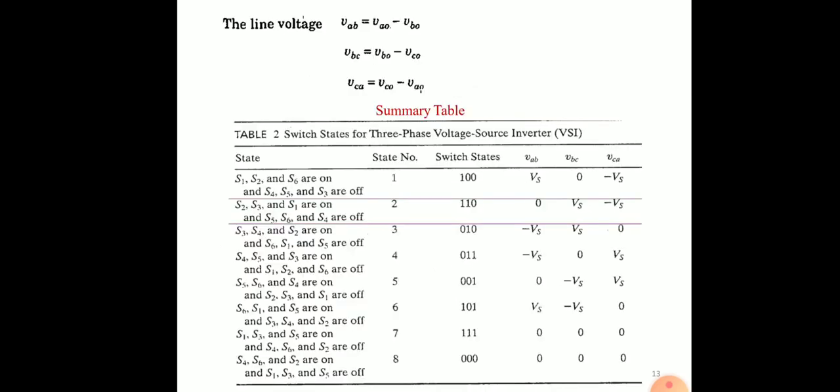For step 2, ωt ≥ π/3 to less than 2π/3, thyristors 6,1,2 conducting. Voltage VBO and VCO are Vs/3 and minus Vs/3 respectively, and VAO is plus 2Vs/3. Line voltage is calculated: VAB = VAO minus VBO, line voltage VBC = VBO minus VCO, and line voltage VCA = VCO minus VAO.